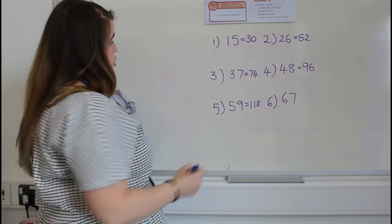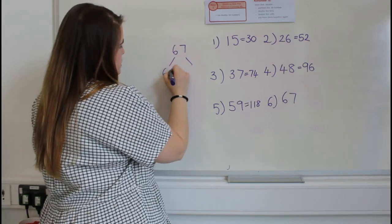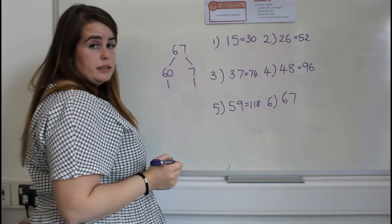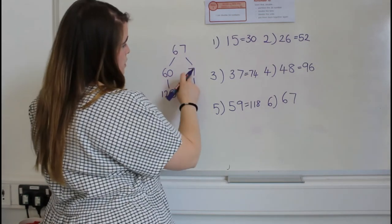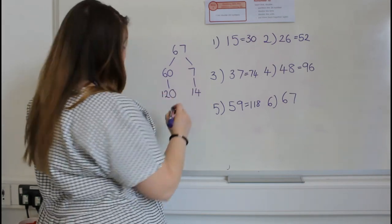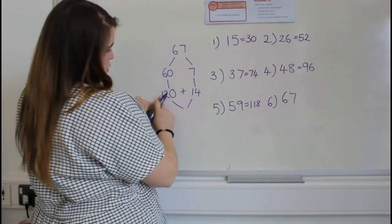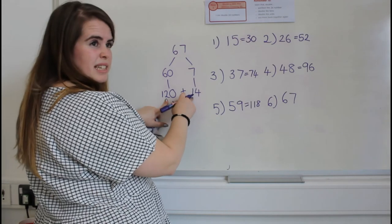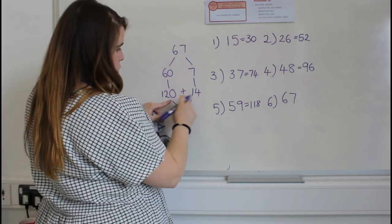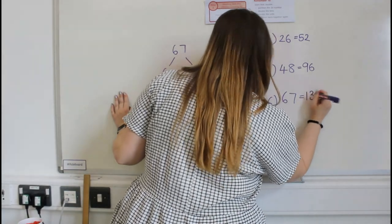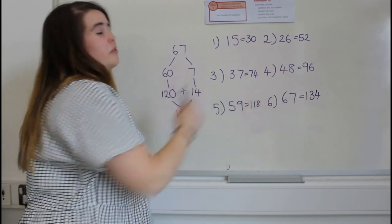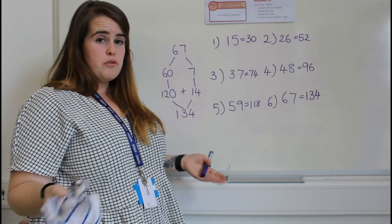Our last question: sixty-seven. Partition into sixty and seven. Double sixty — I know double six is twelve, so double sixty is one hundred and twenty. Double seven is fourteen. Put it back together by adding: one hundred and twenty add fourteen — I've got twenty and ten which is thirty, and then four left over. So double sixty-seven is one hundred and thirty-four. Amazing work if you managed to answer those questions — those last two were extremely tricky! Now you can go around and double nearly any number. Thank you for working so hard today — I hope you enjoyed the video and I hope to see you again soon. Bye!